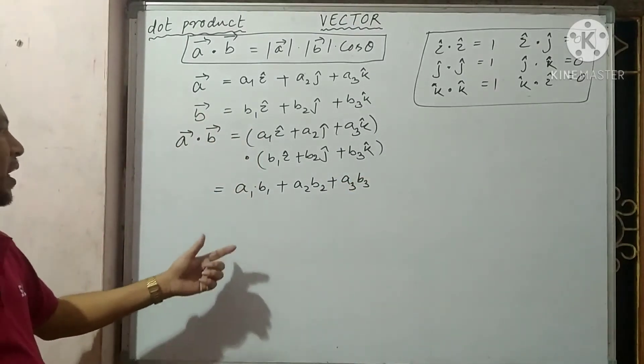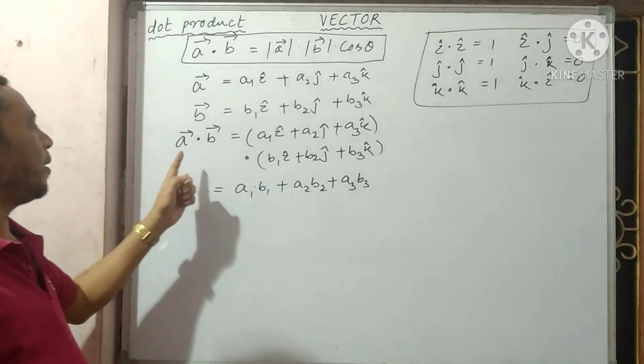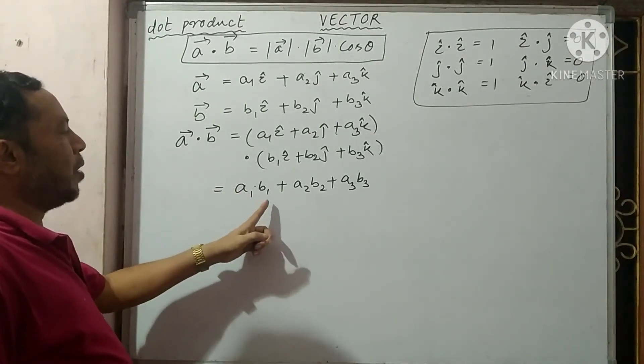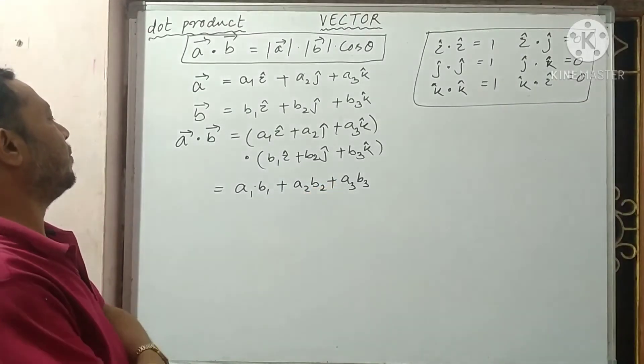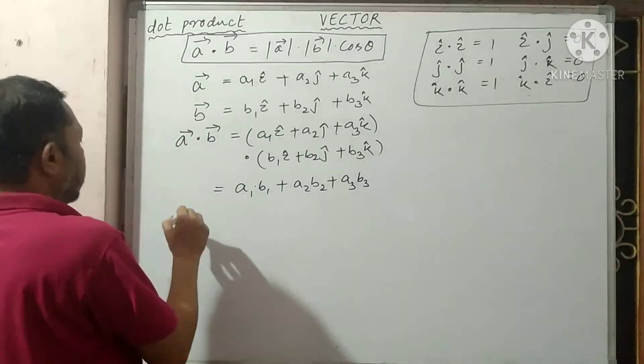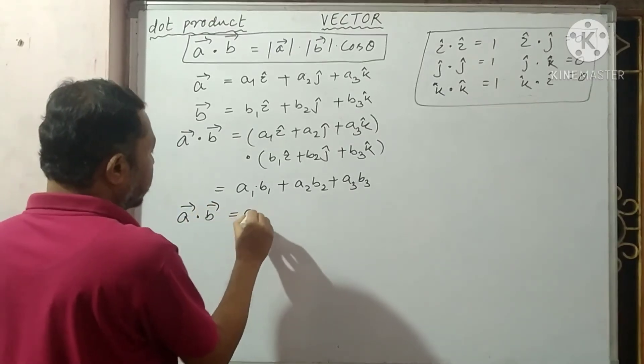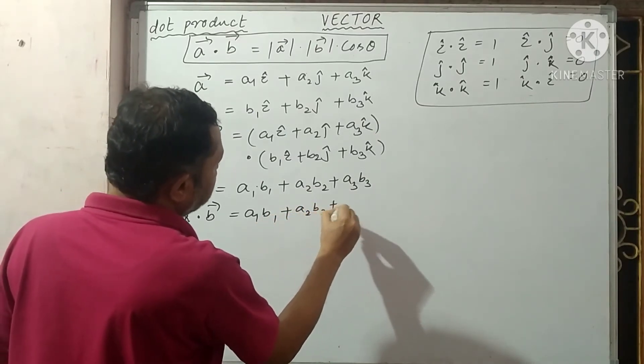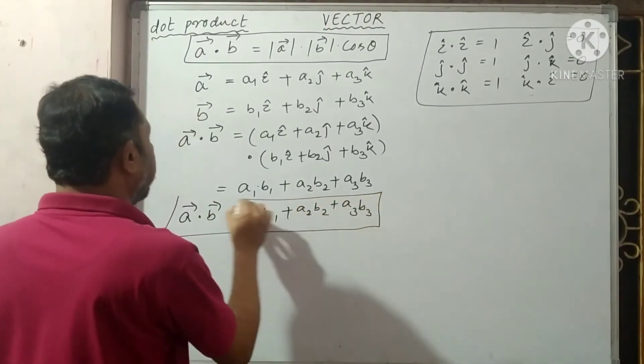which is purely a scalar quantity. So A dot B is equal to A1 into B1 plus A2 into B2 plus A3 into B3. Or we can write A dot B as A1 B1 plus A2 B2 plus A3 B3. We can use this as a formula.